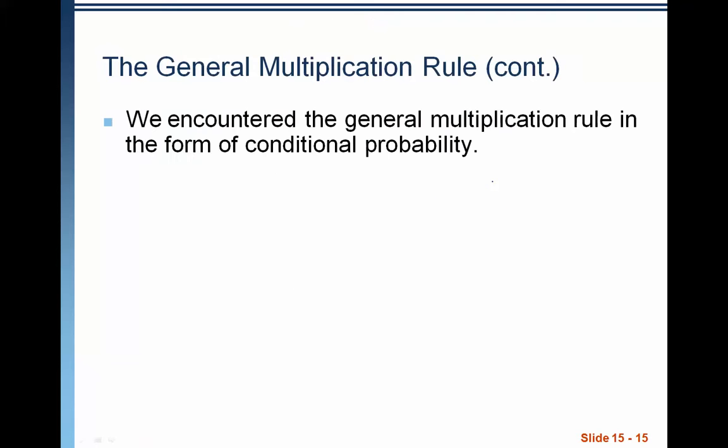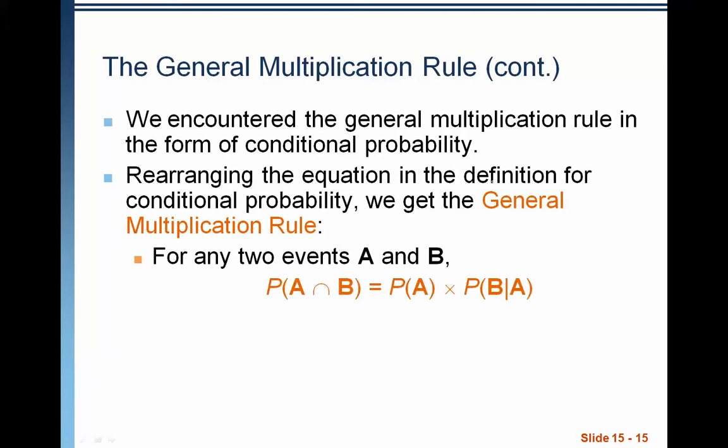So we make a slight alteration to the multiplication rule. And you've actually already seen this multiplication rule change in the last video that we did with Chapter 15 when we were talking about conditional probability. We rearranged this formula that you saw in the last video, which was P of B given A equals P of A and B over P of A. Notice that if we multiply both sides by P of A, those cancel and we end up with P of A times P of B given A equals P of A and B. So this conditional probability rule that we talked about really is the general multiplication rule for when we have non-independent events.